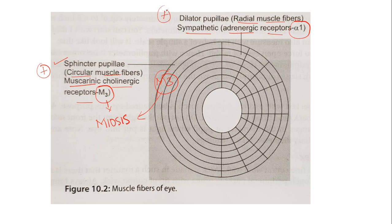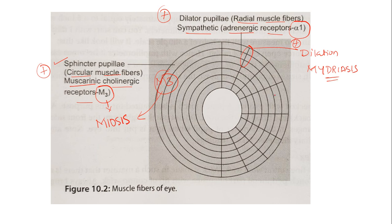When the dilator pupillae — that is, the radial muscle fibers — are activated by the sympathetic nervous system, the alpha-1 receptor present in the radial muscle fibers is stimulated. Activation of alpha-1 leads to contraction of the radial muscle fibers, causing dilation of the pupil, which is called mydriasis. These are the two effects noticed following stimulation of the respective receptors.